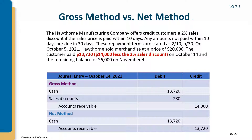If the customer pays within the discount period under the gross method, credit accounts receivable for the full $14,000 they're paying off, debit the contra sales revenue account 'sales discounts' for $14,000 × 2% = $280, and debit cash for the actual amount received of $13,720. Under the gross method, we assume the customer doesn't take the discount — and if they do, we store it in the contra sales revenue account.